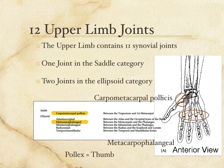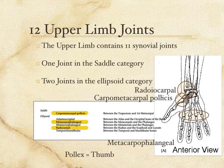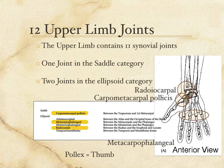The other ellipsoid joint is the radiocarpal joint — the wrist joint. This is where your hand bends in relationship to your forearm, primarily between the radius and the carpal bones. The ulna is also there, but 90% of the joint is between the carpals and the radius. It's ellipsoid because your hand both hinges at the wrist and can abduct and adduct. So there are two joints in the ellipsoid category.